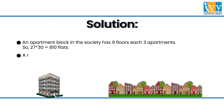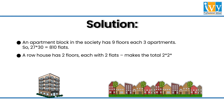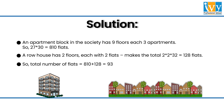Moving on to the row houses, each row house has 2 floors and each floor has 2 flats, making a total of 128 flats across all row houses. So in total we have 810 flats plus 128 flats, which makes 938 flats.